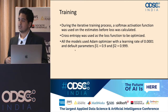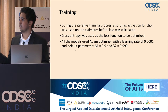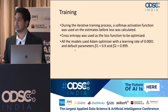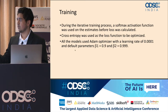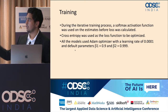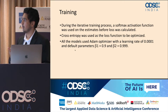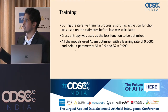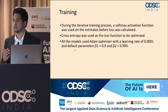During the training process, a softmax activation function was used before loss was calculated, and cross-entropy was used as the loss function to be optimized. All models used the Adam optimizer with default parameters and a learning rate of 0.0001. These things — loss functions, optimizers — can all be changed to try and get a better model.